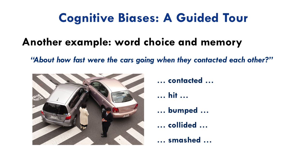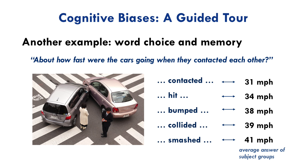So what do you think the results were? The estimated speeds that subjects wrote down were systematically higher depending on the forcefulness of the verb used to describe the contact. These are the averages: 31 miles per hour for 'contacted' versus 41 miles per hour for 'smashed.' So here's a case where one's memory of an event can be manipulated by the choice of words used to solicit an answer.